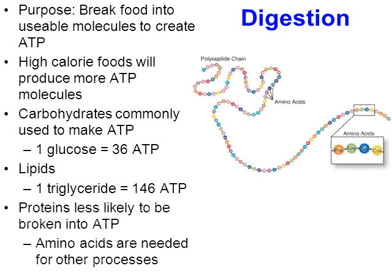What about proteins? Proteins are common in the foods we eat, but proteins are not usually digested to build ATP. Here's a picture of a chain of amino acids, which is what proteins are made from. When proteins are broken down, those amino acids are usually used for other processes. So ATP typically comes from the carbohydrates and glucose we eat and from the lipids we eat.